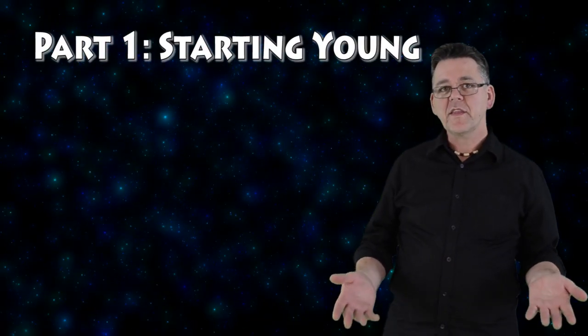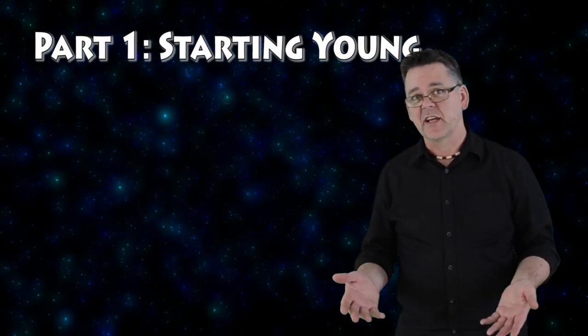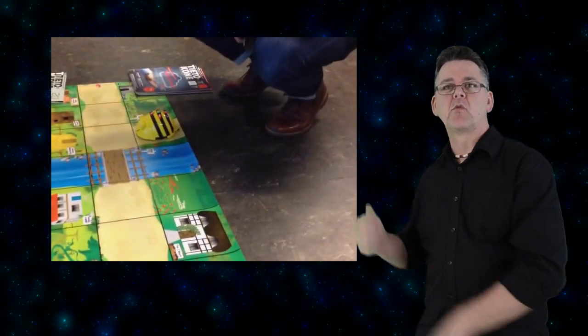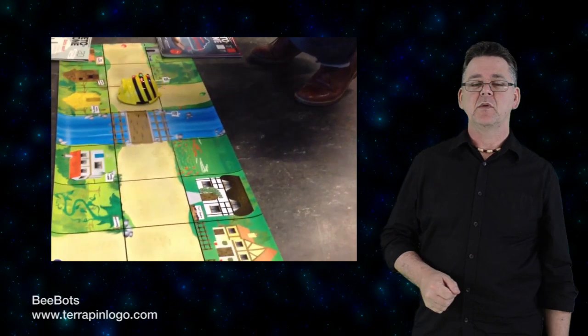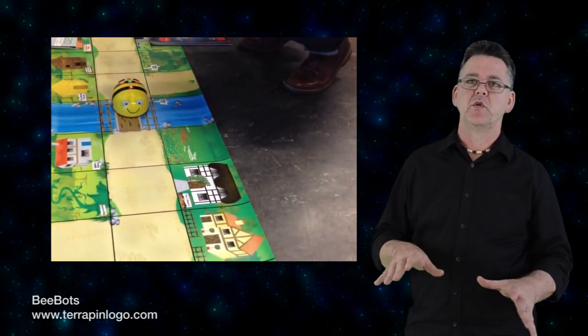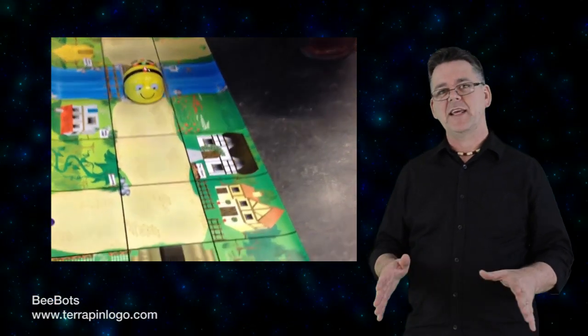Let's start with young students. One of the key ideas of programming is sequencing, or putting instructions in a specific order. Using little programmable robots called B-bots, for example, very young students can pretty easily program them with a series of moves and turns to get through a maze or grid.